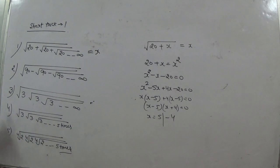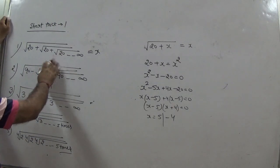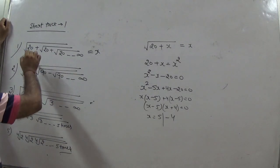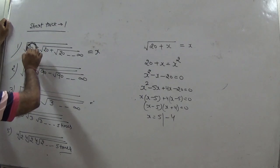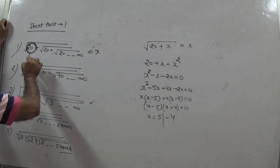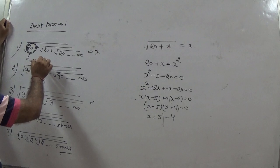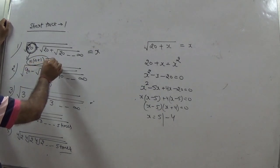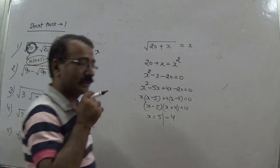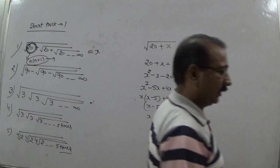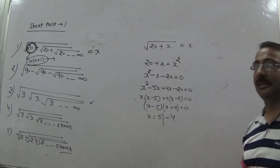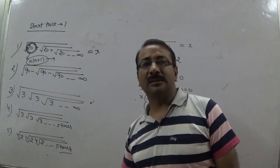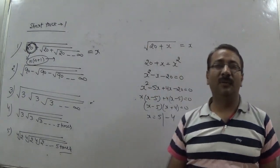Now here is the short trick. When you see such a question, your first task is to check whether the given number can be written as a product of two consecutive integers. For example, 20 can be written as 4 × 5.